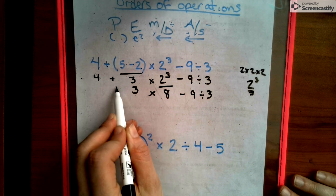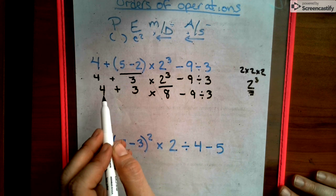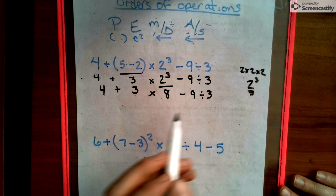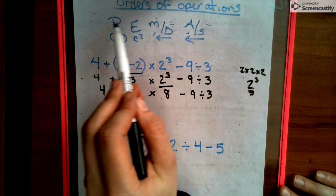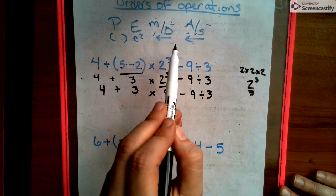Now, as tedious as this is, it's super important. So then you look at this third line down and you say, is there any more exponents? And the answer is no. So we're done with the P, we're done with the E. We're now into the M and the D.